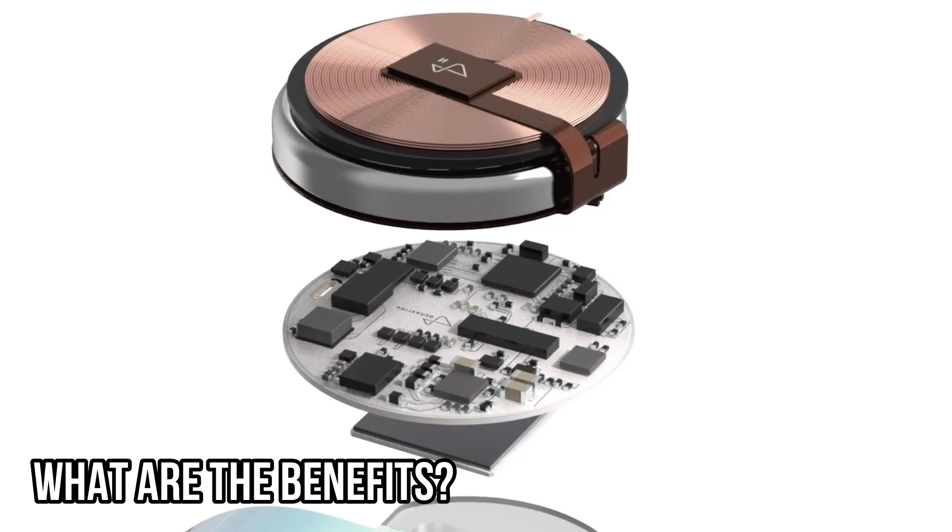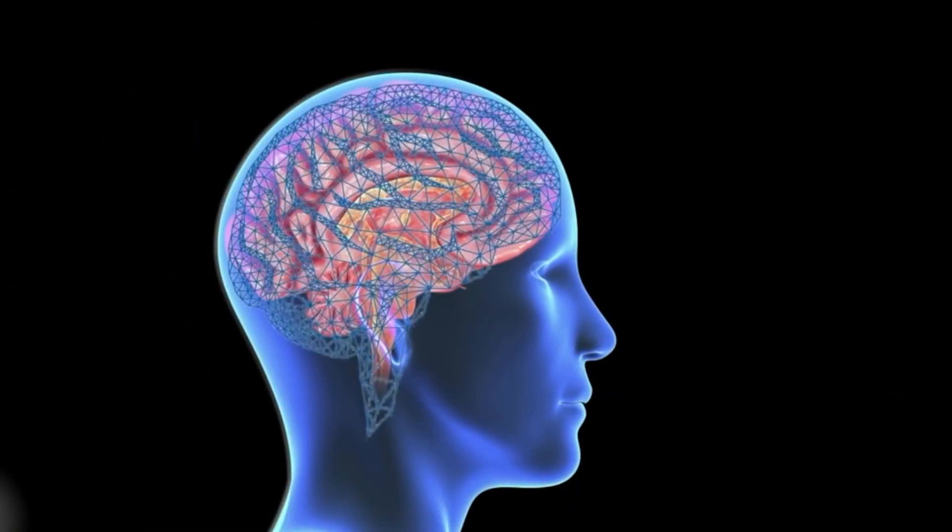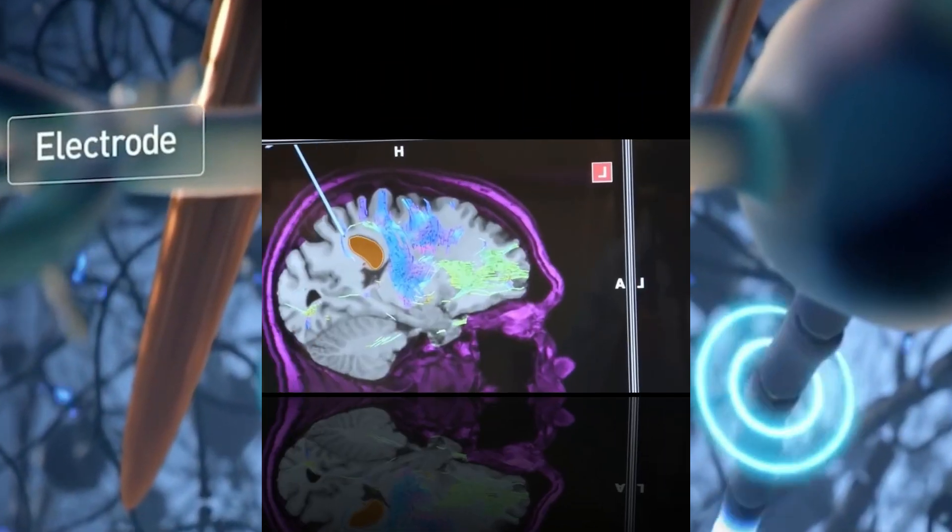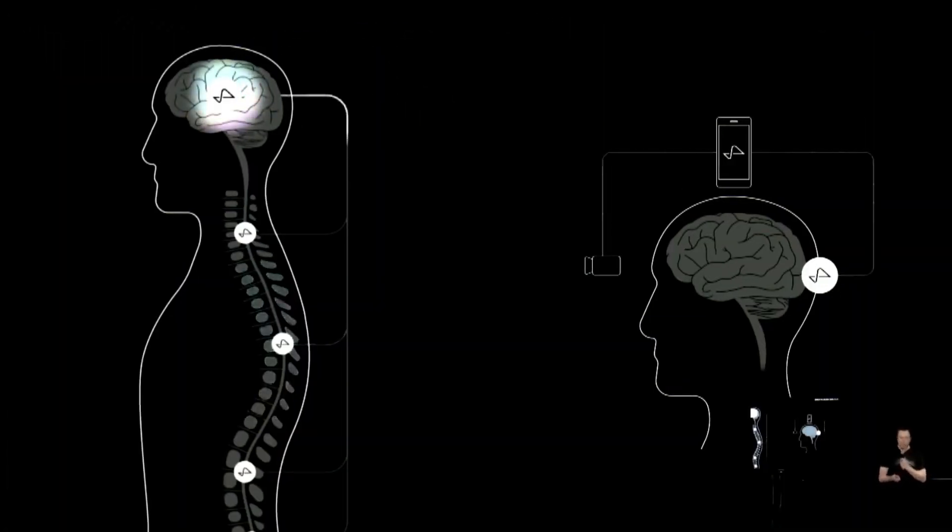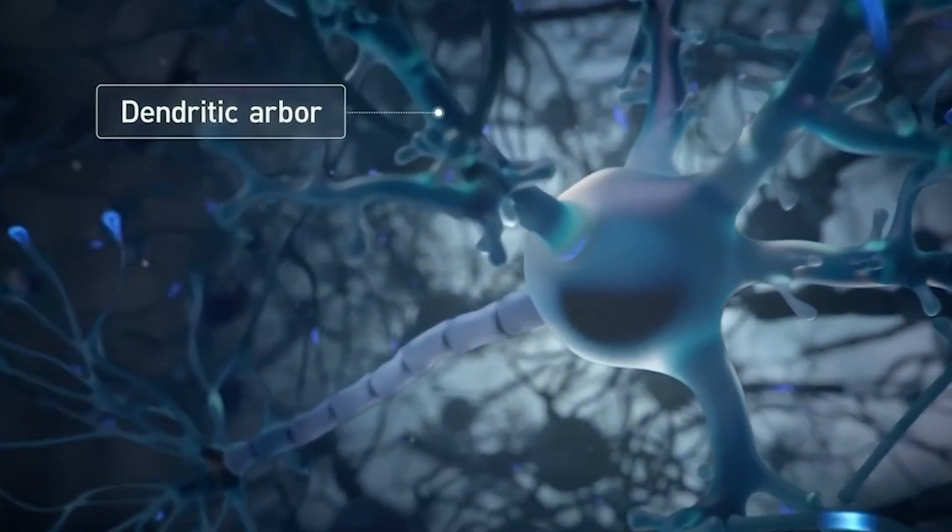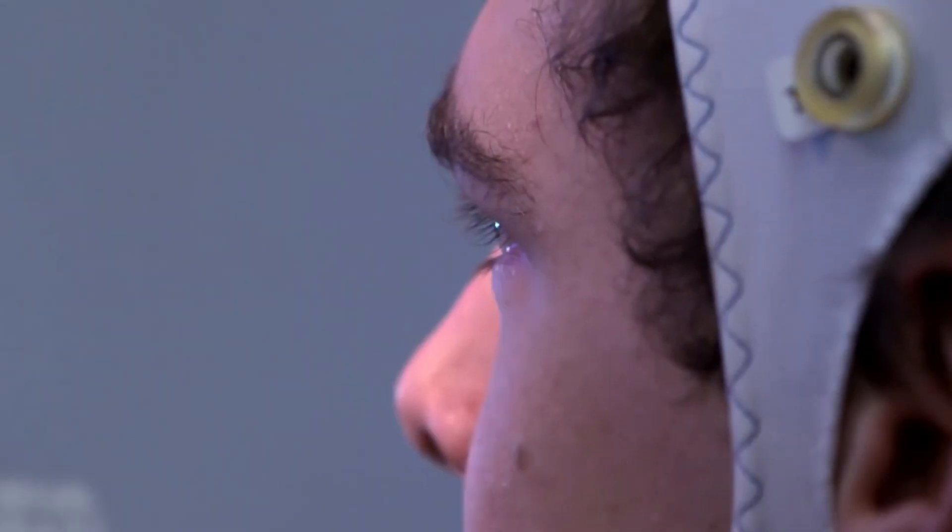What are the benefits? The potential benefits of Elon Musk's Neuralink are truly revolutionary and could dramatically change the way humans interact with the world around them. Neuralink has the potential to dramatically increase our cognitive abilities by connecting us directly to technology, allowing us to access information much faster than ever before. This could potentially open up a whole new level of communication between people as we would be able to exchange thoughts and ideas more quickly and efficiently.